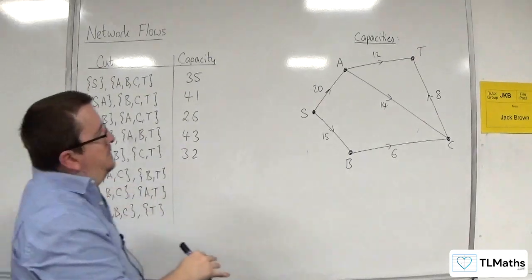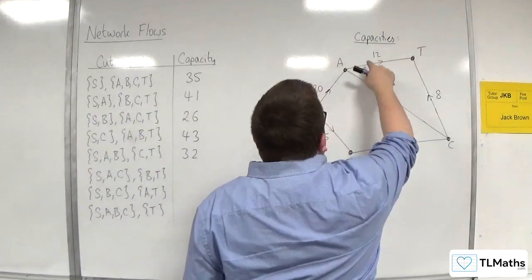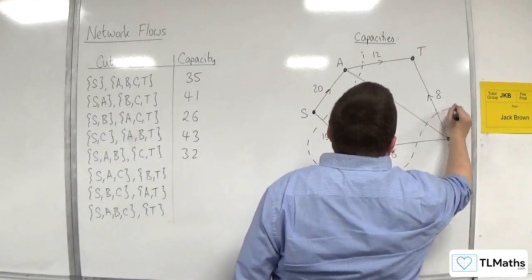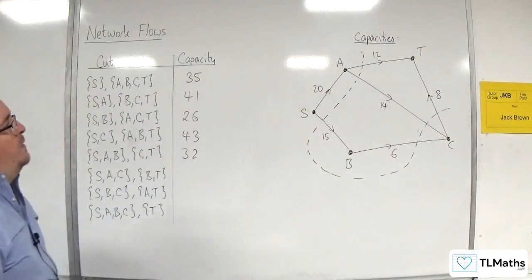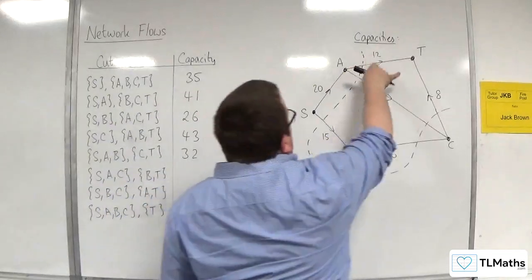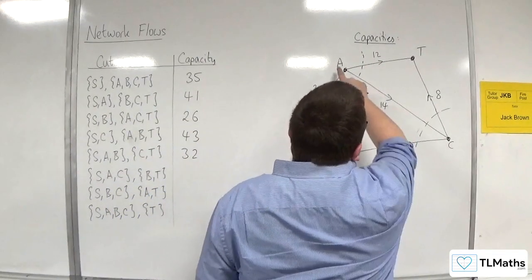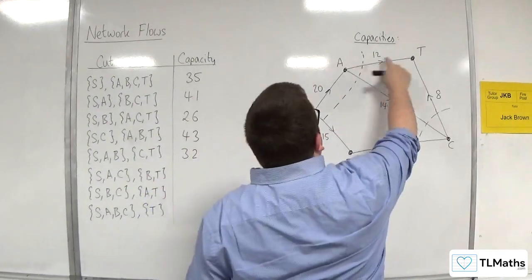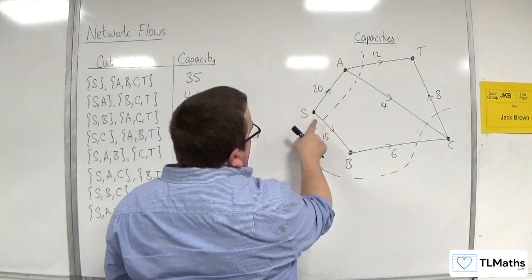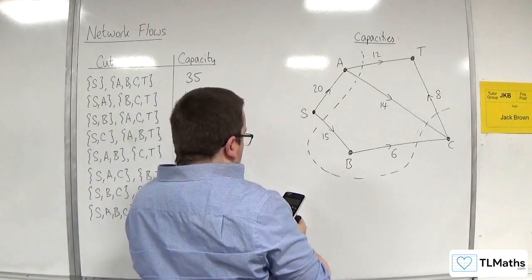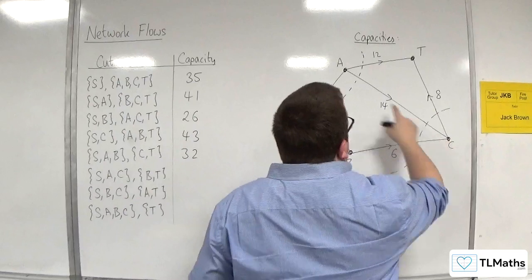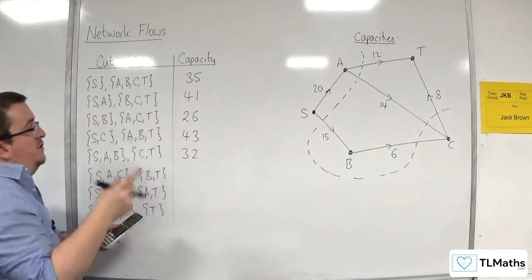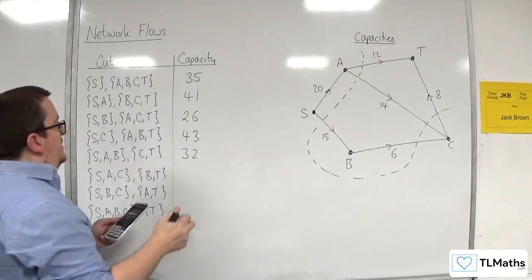S, A, C — that's cutting those. So we've got A to T, but not A to C because that's going from source to source. So we've got 12. Then S to B, so plus 15. Not B to C, not A to C — but C to T is included, so plus 8. So 12 plus 15 plus 8 is 35.